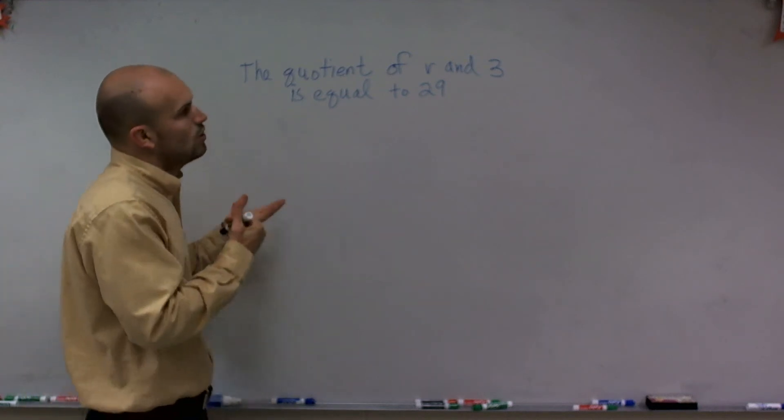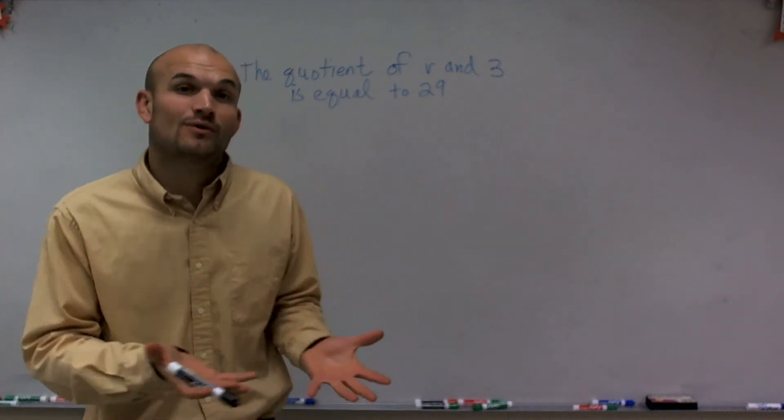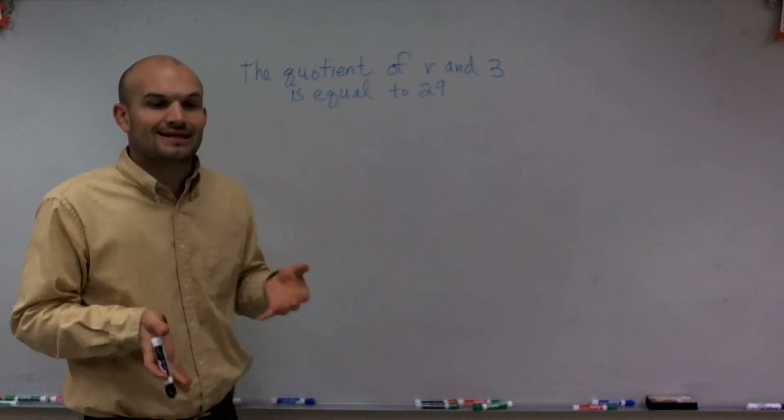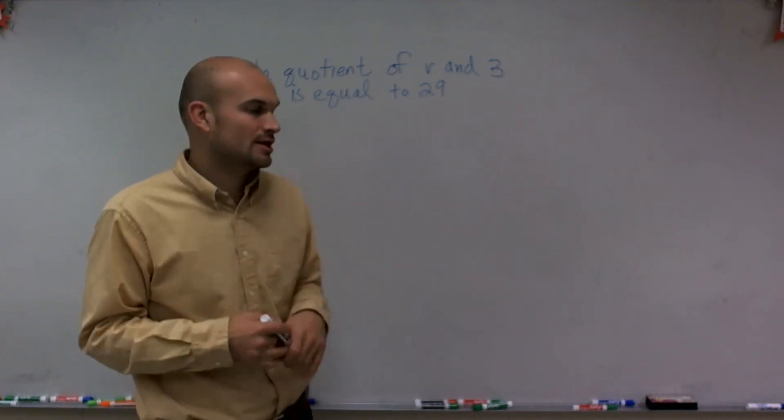So what I have is the quotient of v and 3 is equal to 29. The main important thing is I know this is going to be an equation because I see the equal sign. The equal sign represents a statement equal to another statement.